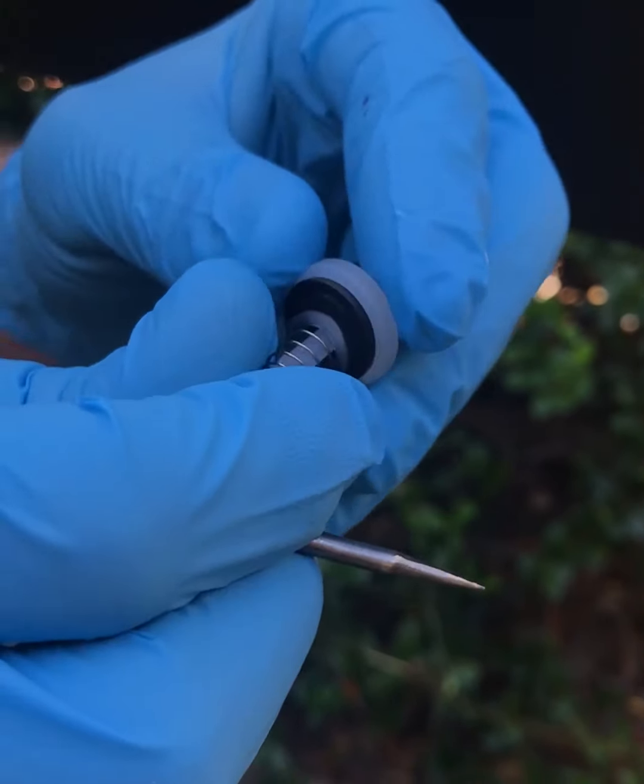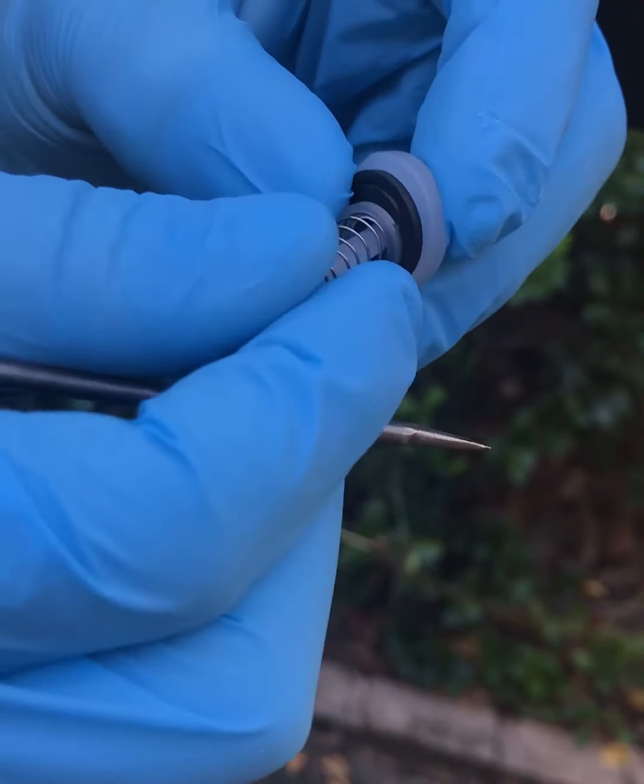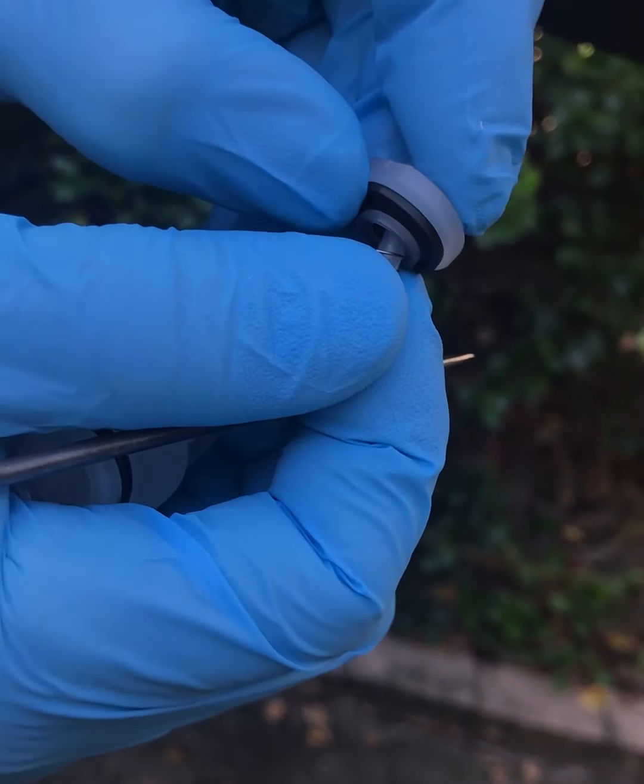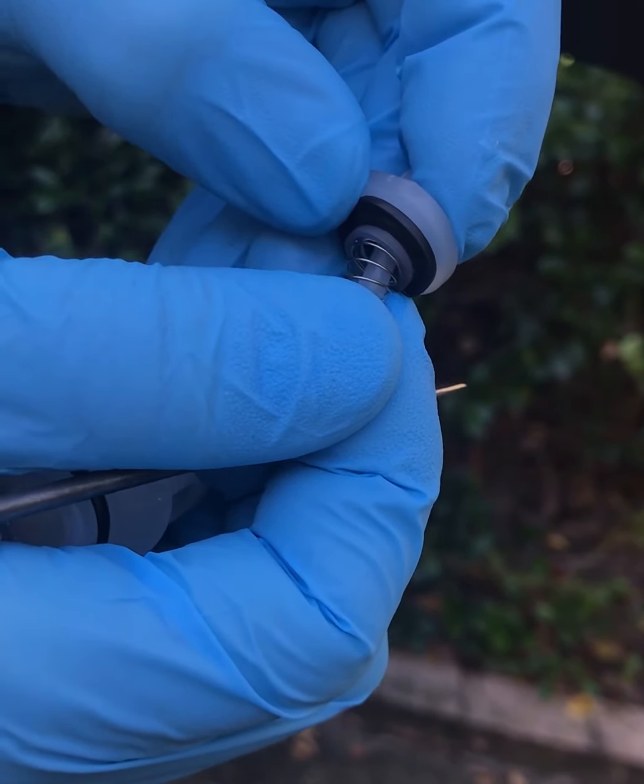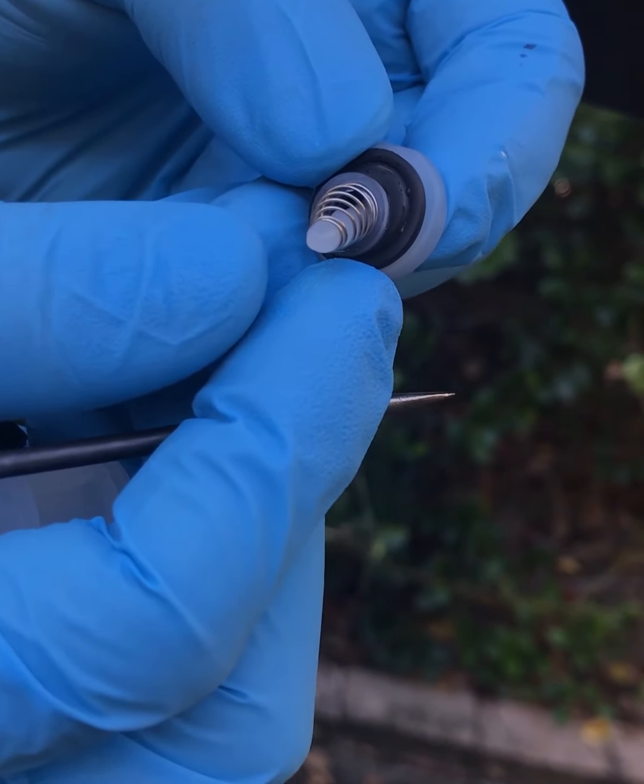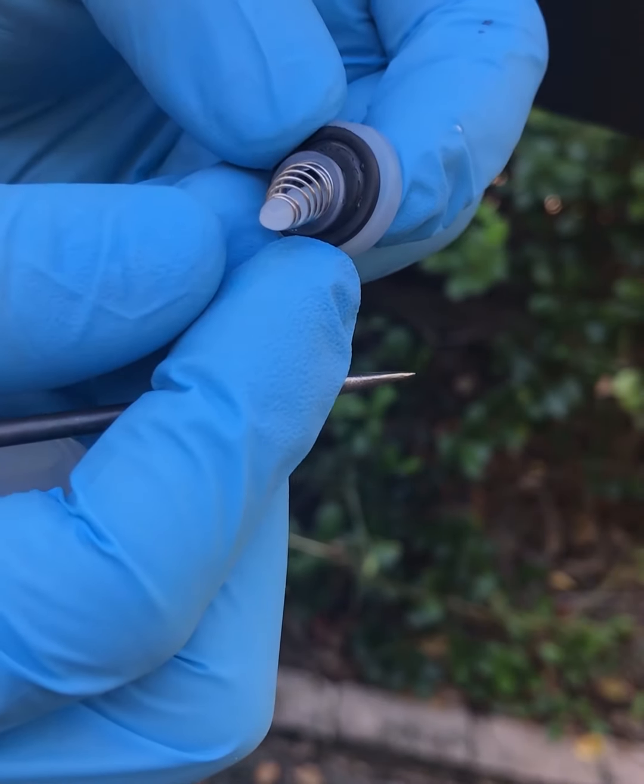And you'll also want to check on the backside of the seal between the spring for any foreign debris or particles. Once the check valve has been thoroughly inspected, it is time to reinsert it onto the bottom piece.